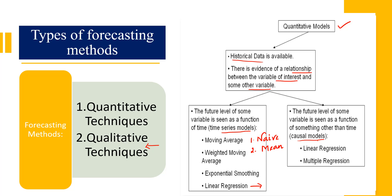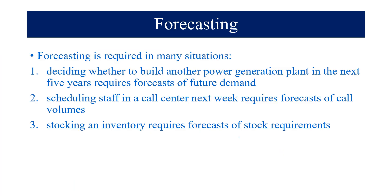All of that can be identified using a time series analysis. On the other hand, when we want to identify whether the forecasting is influenced by factors other than time, then we call this a causal model. In order to do this we will be using linear regression and multiple regression. Let me take you to the first model called the naive method.